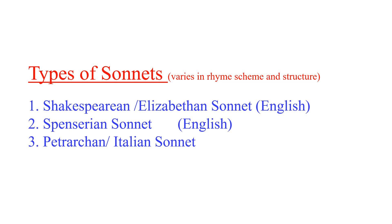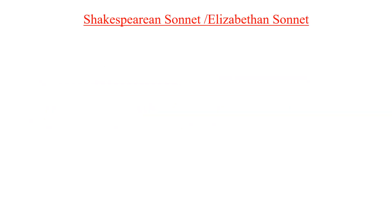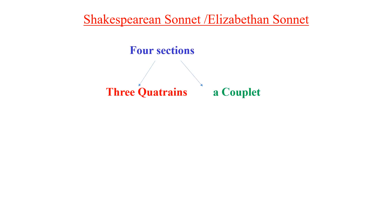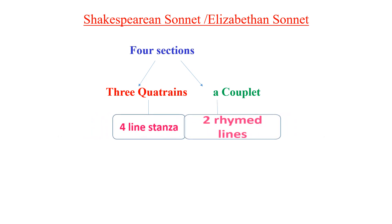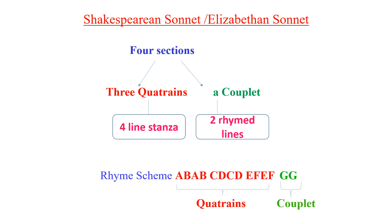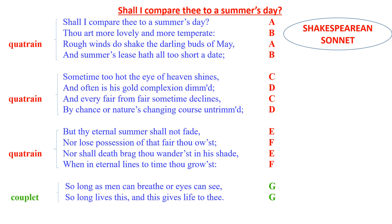The Shakespearean or Elizabethan sonnet has four sections: three quatrains and a couplet. A quatrain is a four-line stanza and a couplet is two rhymed lines. The rhyme scheme is ABAB CDCD EFEF for the three quatrains, and GG for the couplet.